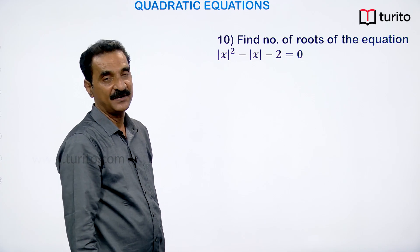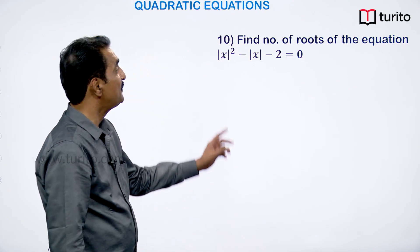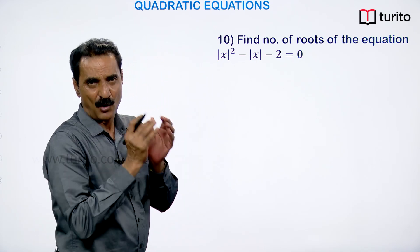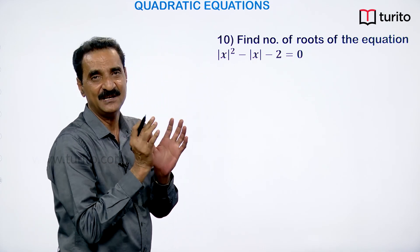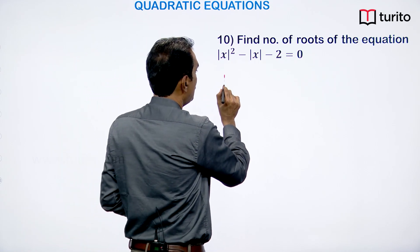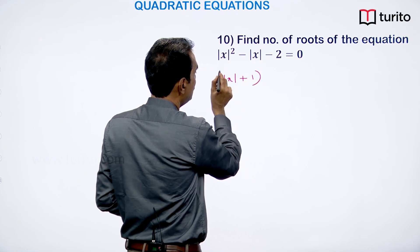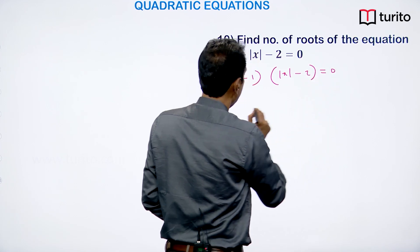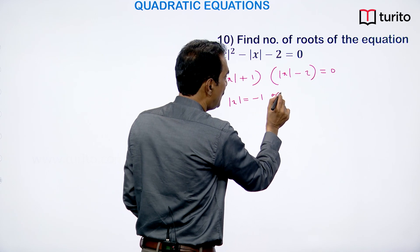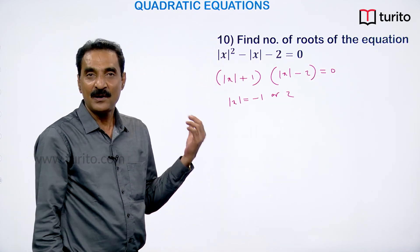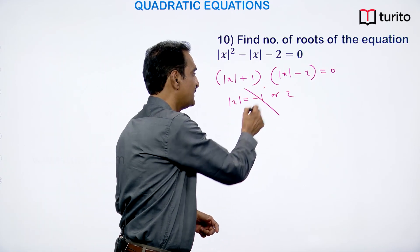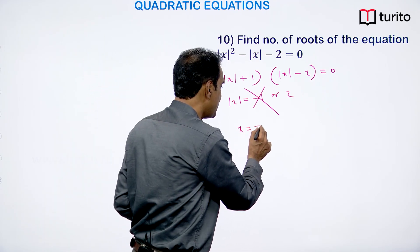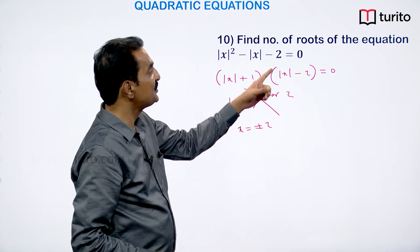Question: Find the number of roots of |x²| − |x| − 2 = 0. Let t = |x|. Factorizing: (|x| + 1)(|x| − 2) = 0, giving |x| = −1 (rejected, since |x| ≥ 0) or |x| = 2, so x = ±2. The number of roots is 2.